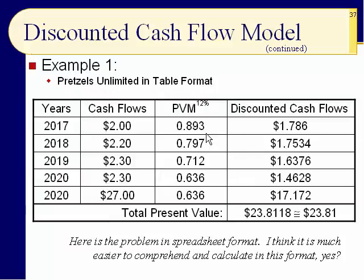Let's rearrange the calculation into a table, which makes it much easier to see what we're doing. We put the years on the left, the cash flows from dividends, the PVM at 12%, and then the discounted cash flows. We're discounting future cash flows — $2, $2.20, $2.30, $2.30, and $27 — turning them into present values. That's why the model is called the discounted cash flow model.